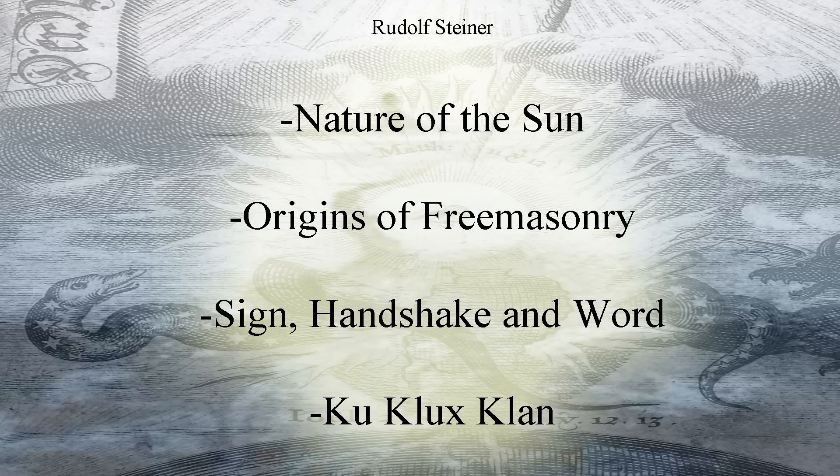Rudolf Steiner: it's like this. The sun's rays, as we see them, are not actually a reality. But if we consider the sun the way it is, it is not really physical matter. It is, in fact, spiritual — a hollowed-out form created in space.